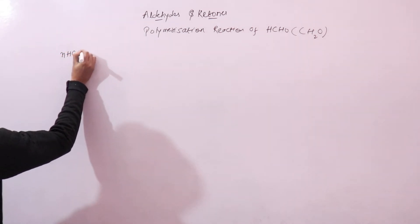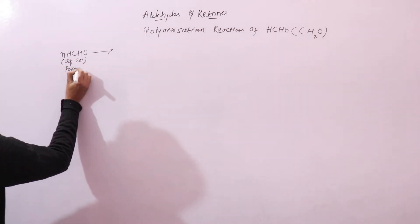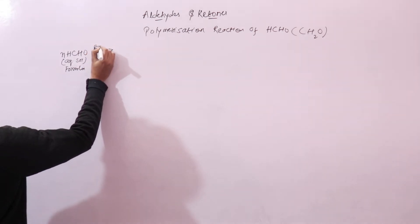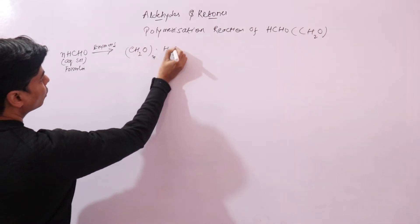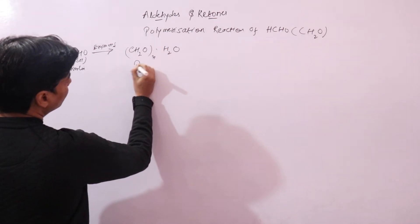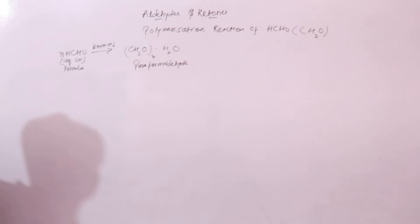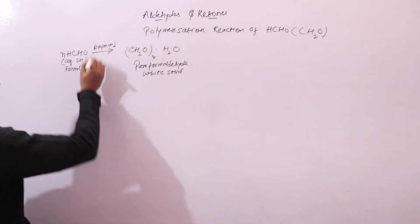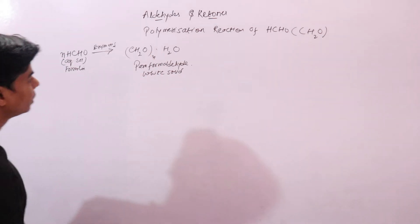So we have n·HCHO, an aqueous solution called formalin. When this aqueous solution of formaldehyde is evaporated to dryness, what you get is (CH₂O)n·H₂O, which we call paraformaldehyde. This is a white solid, and if you heat it you will get back formaldehyde. Remember it has one water molecule, so this is the hydrous form of formaldehyde.